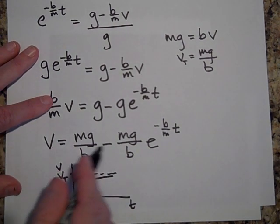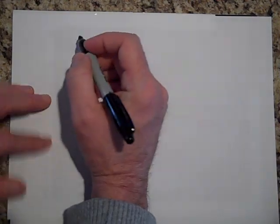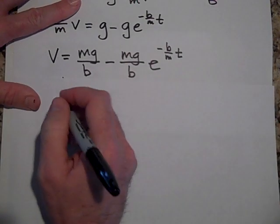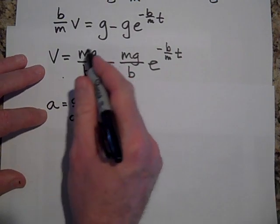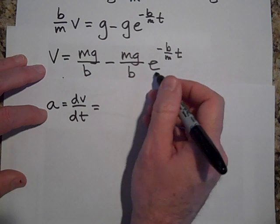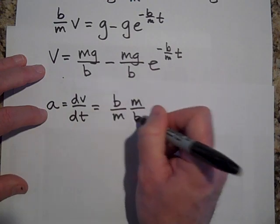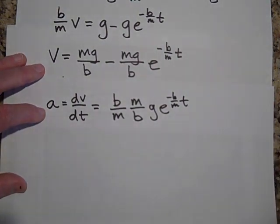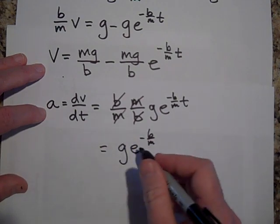So that's how velocity changes with time. If you want to know how acceleration changes with time, you just take the derivative of v with respect to t. The derivative of the constant is zero, and the derivative of the exponential term gives (b/m)(m/b) — the two negatives cancel — times g times e to the negative b over m times t. Those factors cancel mathematically, so a equals g times e to the negative b over m times t.